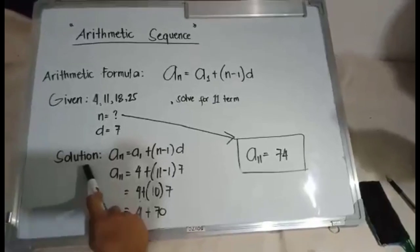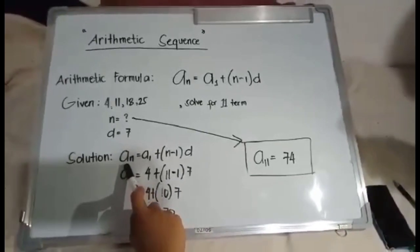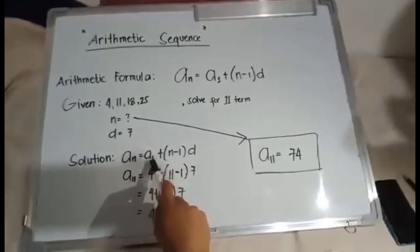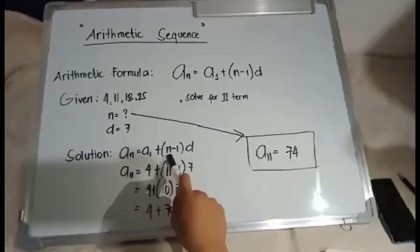So our solution is first we need to write the formula, which is a_n = a_1 + (n - 1)d.